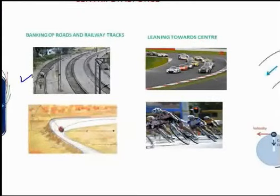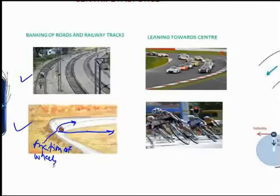Now let us see illustrations of centripetal force. In banking of roads, when an automobile takes a bend on a level road, the centripetal force is supplied only by the friction between the wheels and the road. This force is very small, so the vehicle must be driven slowly or it may skid. To overcome this, the road bed is inclined by raising the outer edge of the road, which prevents skidding and damage to the tires.